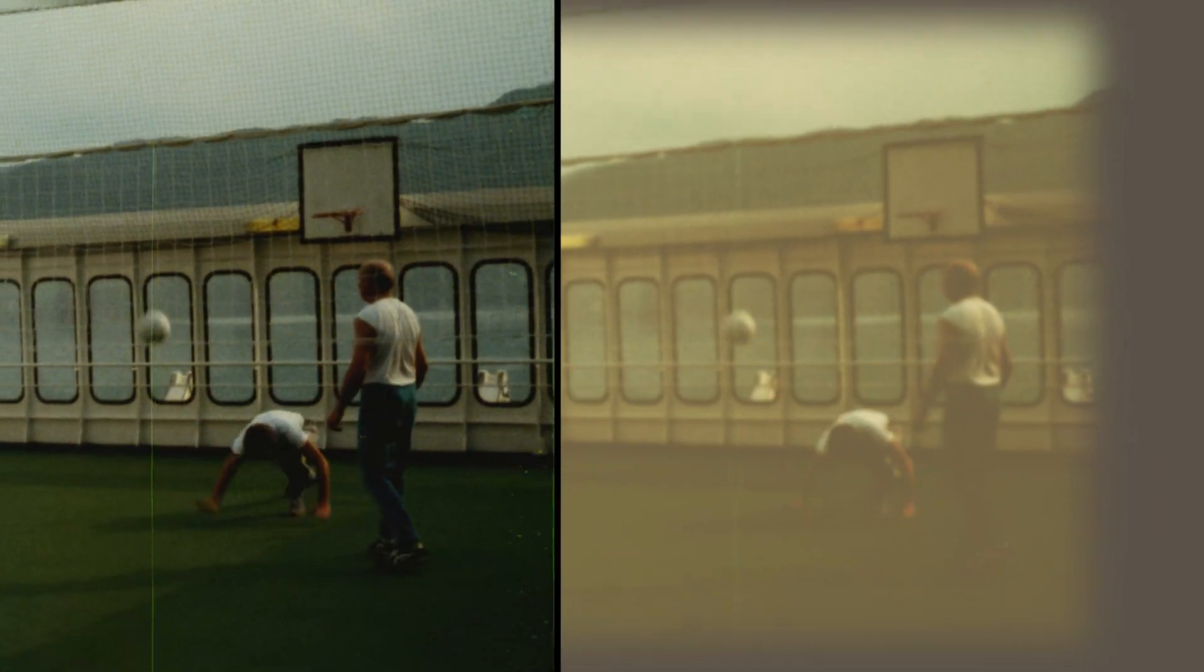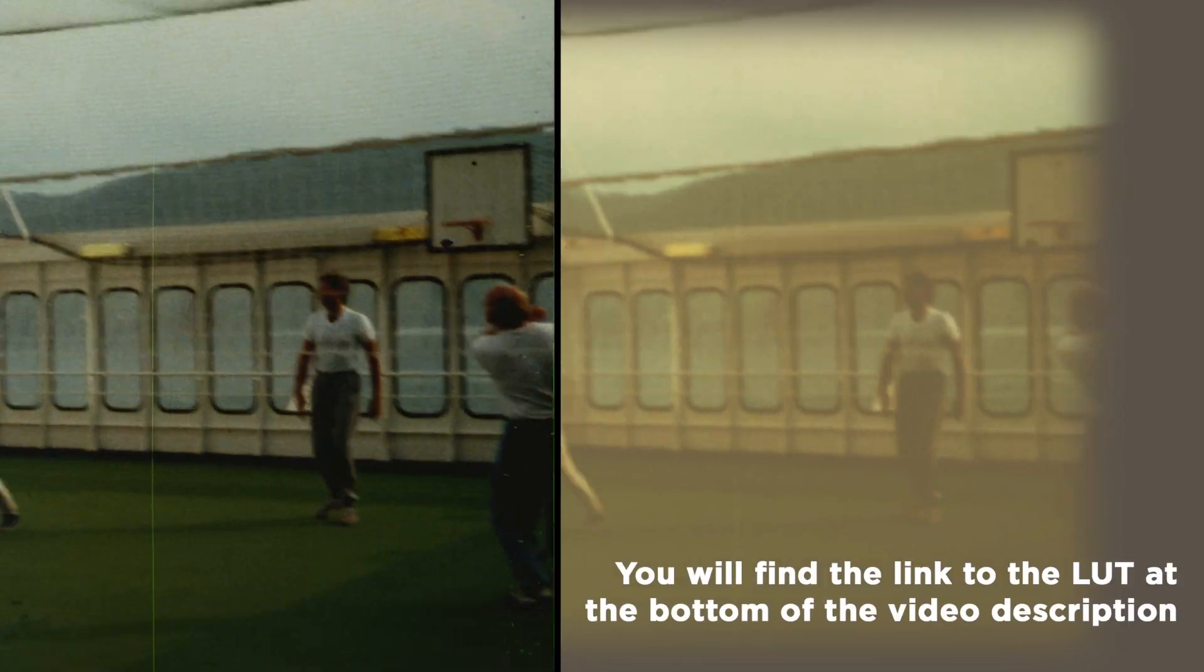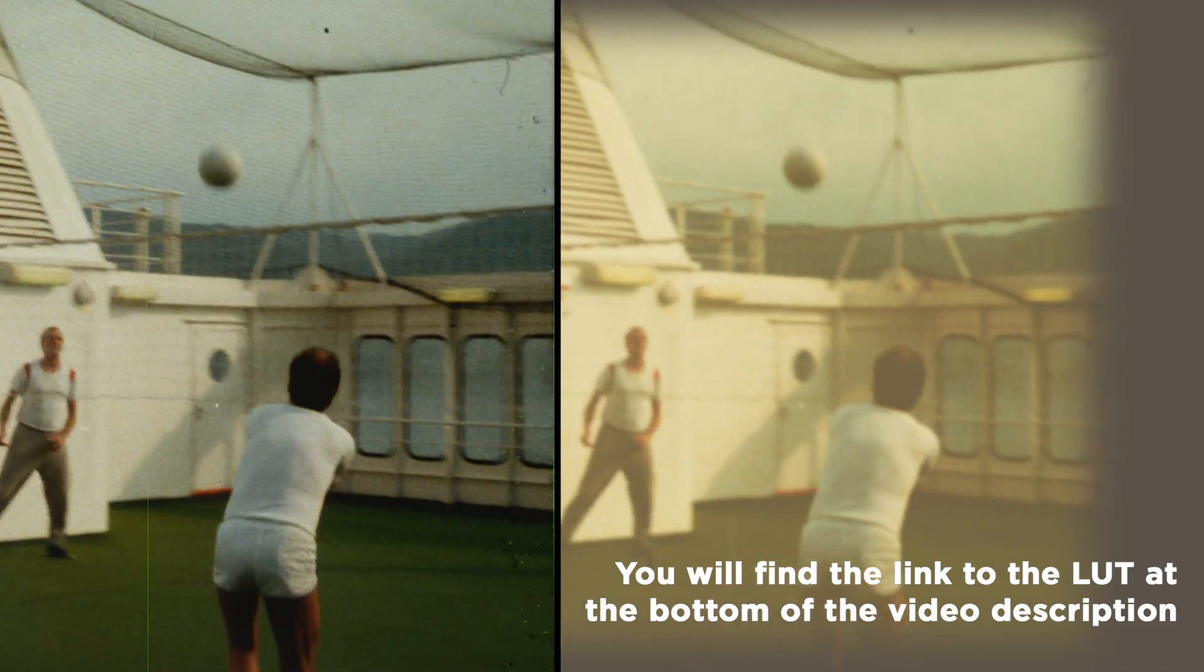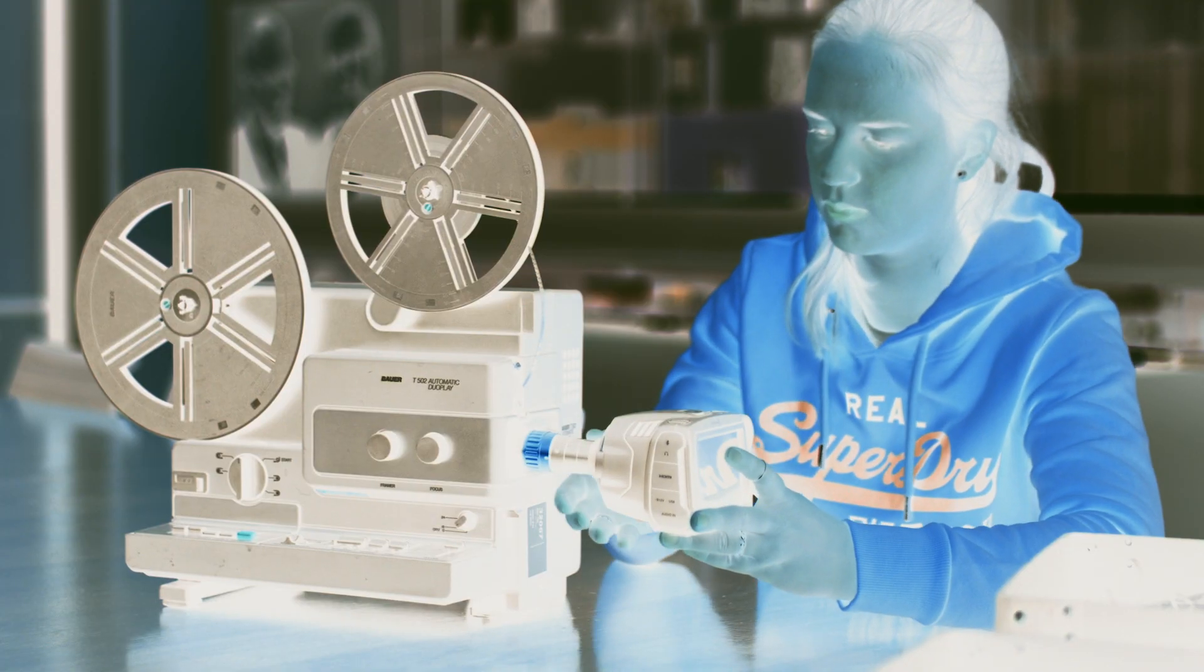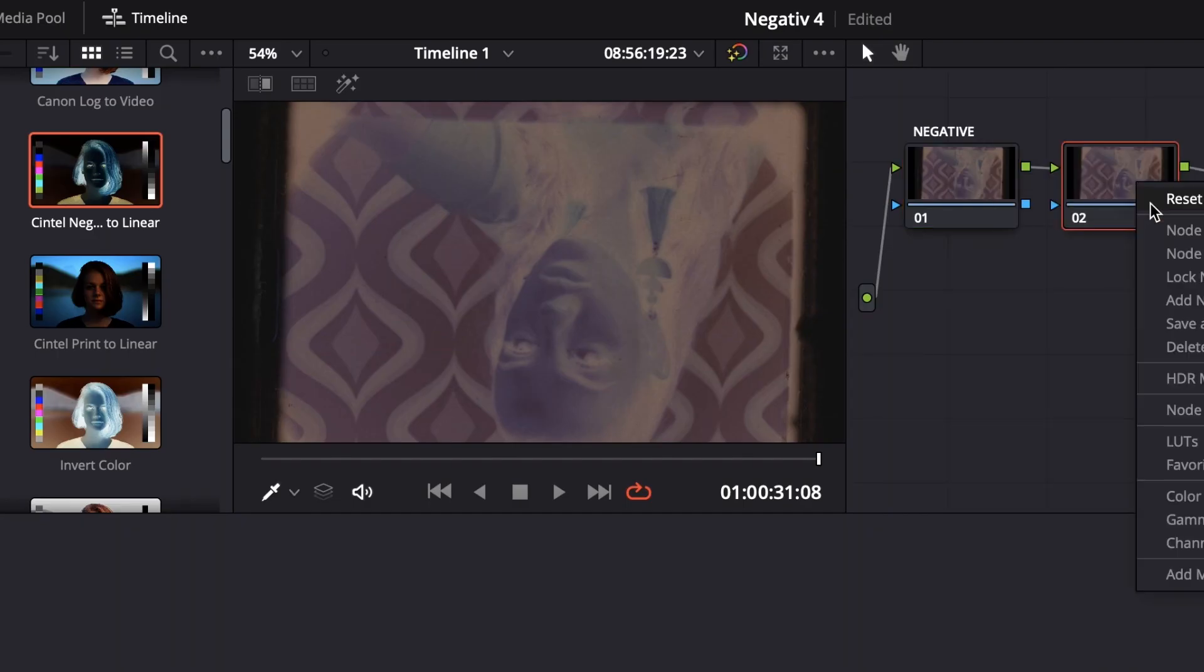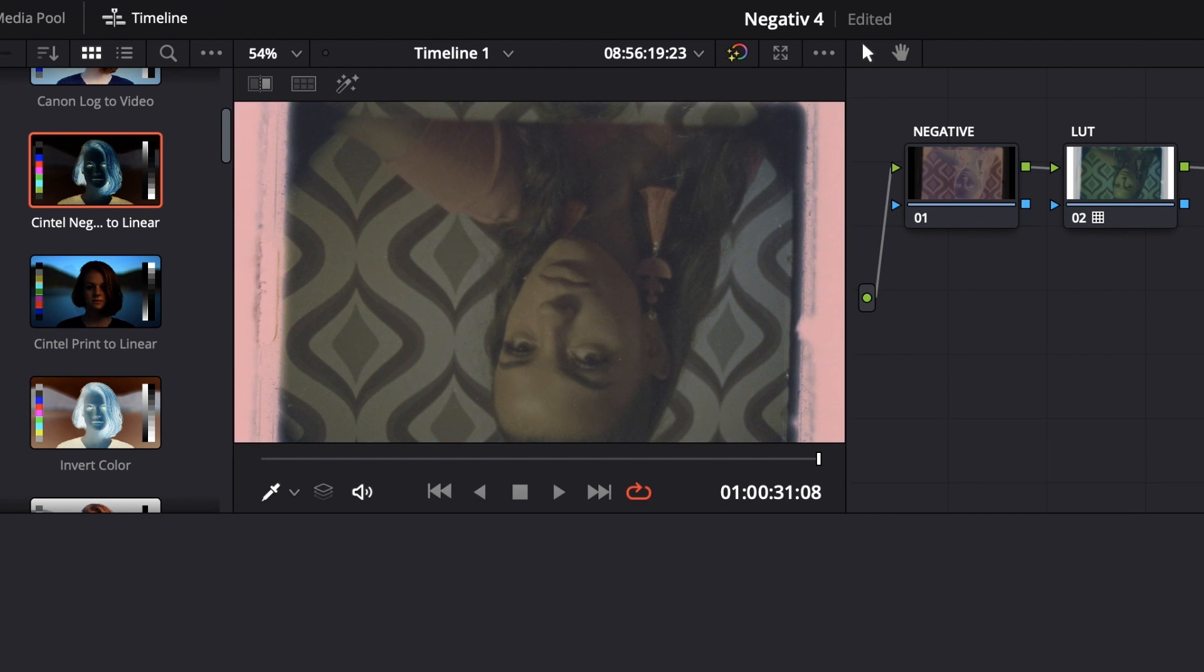The LUT can be easily loaded into DaVinci Resolve. DaVinci Resolve also provides some LUTs, including two or three that convert negative material into positive material. If we try these and use one of them to invert the colored channels, we'll get there faster. Usually, however, you'll need to continue processing the material after reversing it.